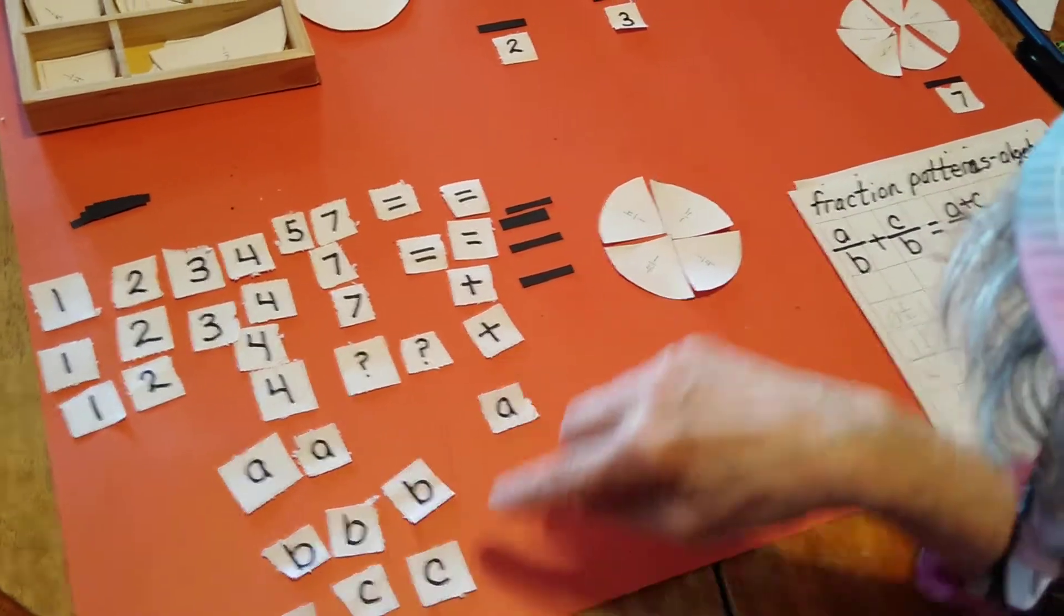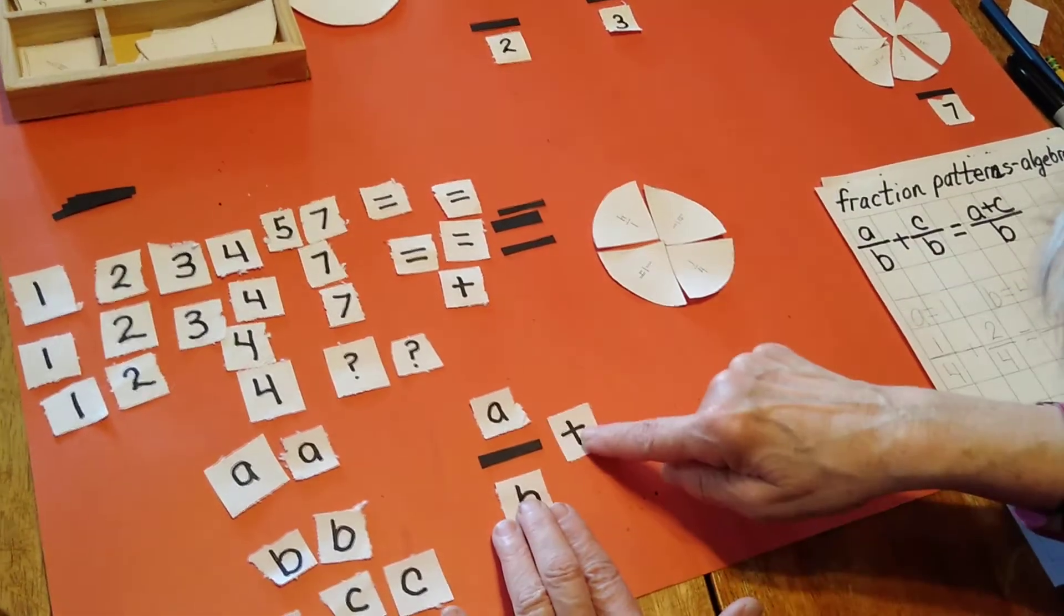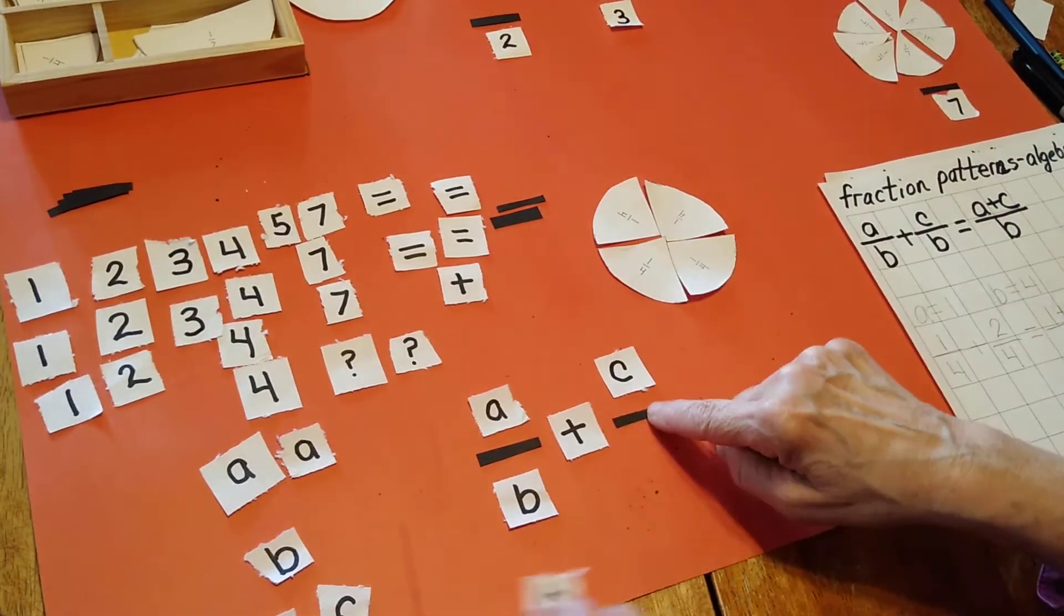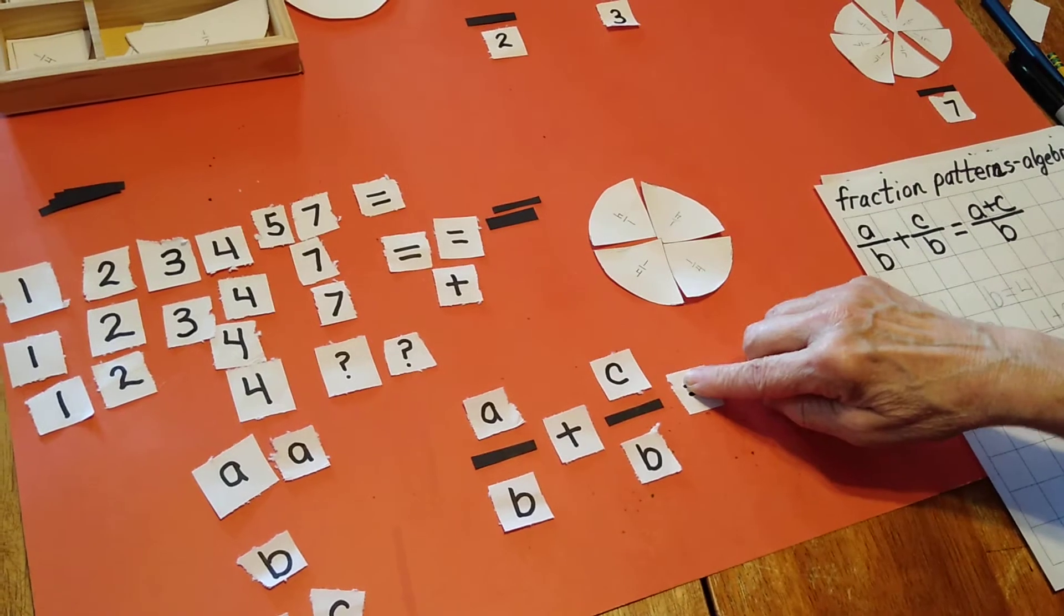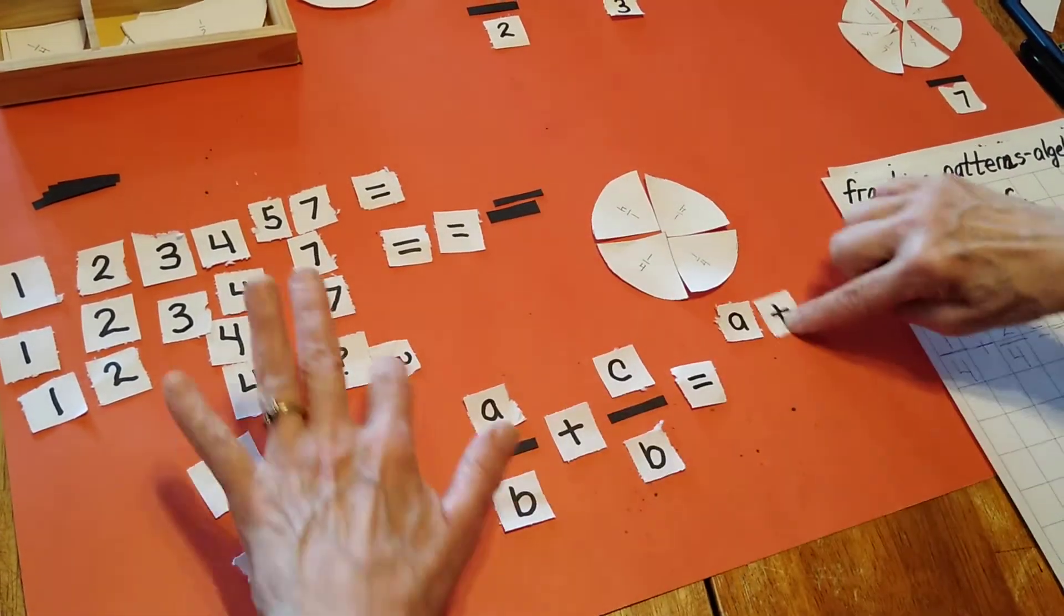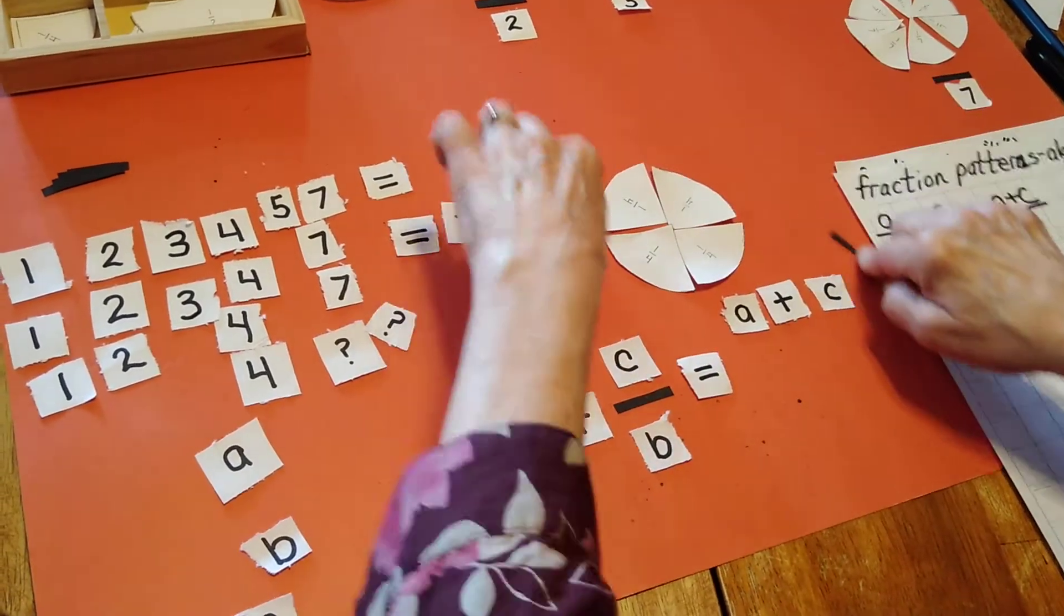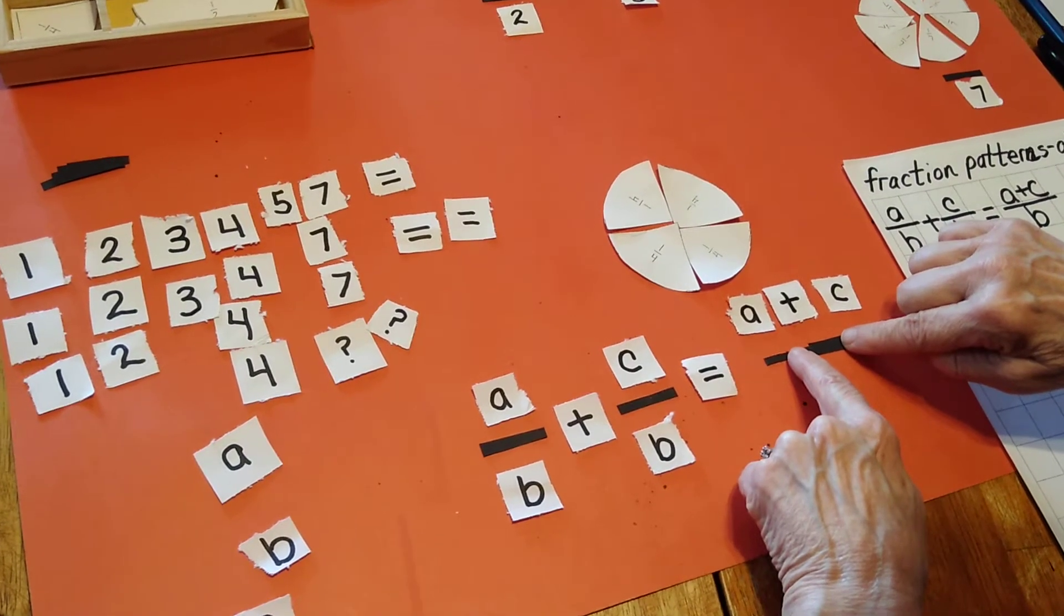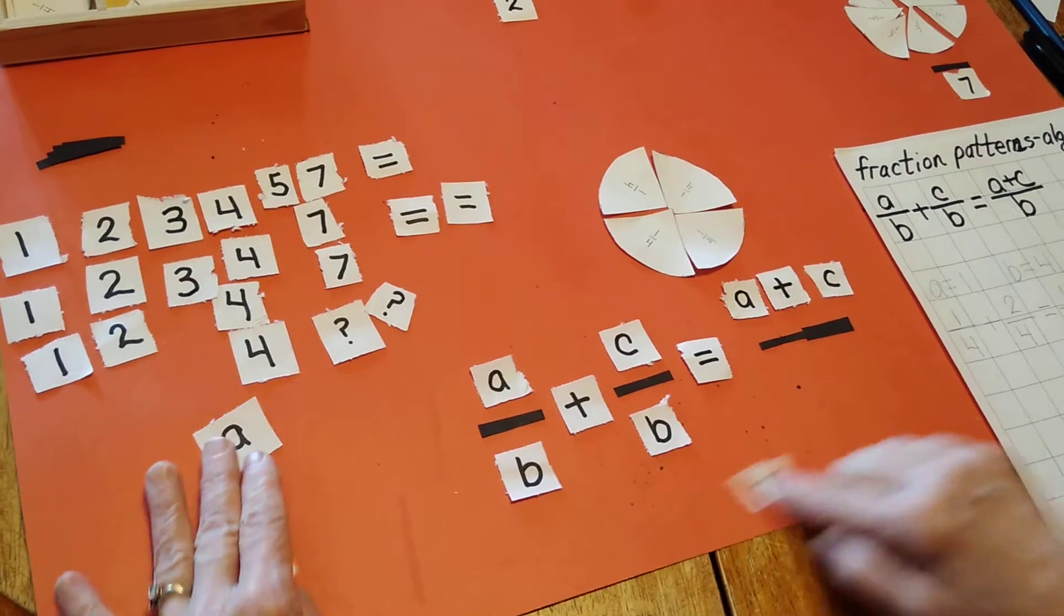I need A over B added to C over B and that's going to equal A plus C, and I'm going to use two of my little denominator strips, my fraction strip, to create that line over B.